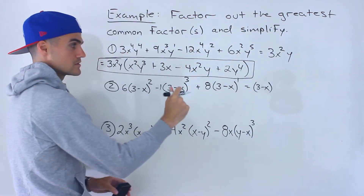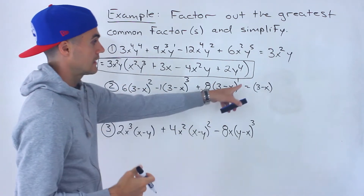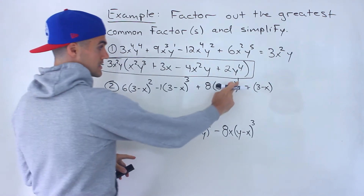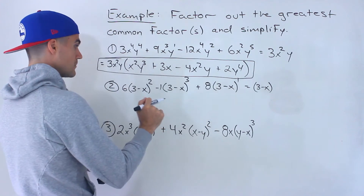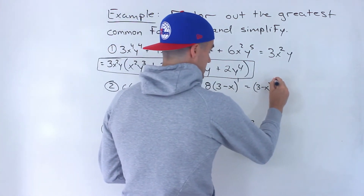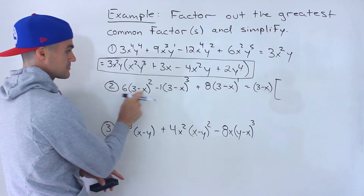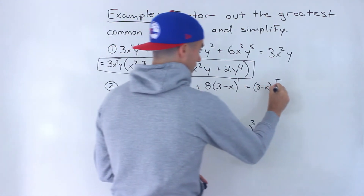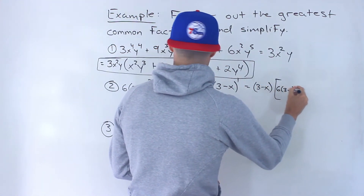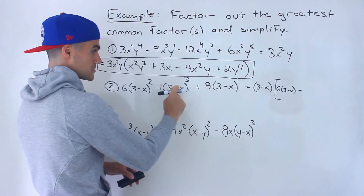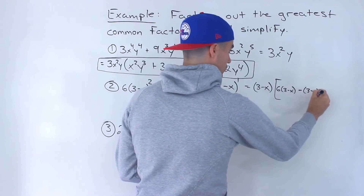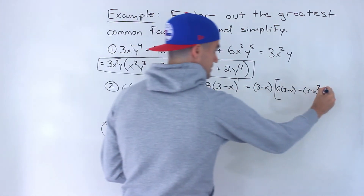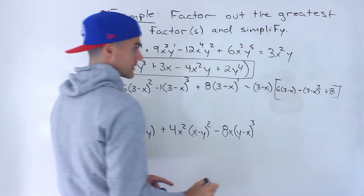If this last term were (3−x)⁵, we could take out (3−x)², that would be the lowest exponent. But in this case it's just 1. So if we take out (3−x), what are we left with? We'd still have 6, but since we took out one (3−x), there's one more left, giving 6(3−x). Then for the (3−x)³ term, we took out one, so two remain. And from the 8(3−x) term, we took out the whole (3−x), so just an 8 is left.